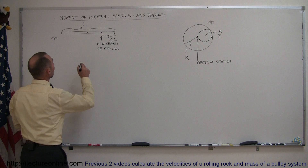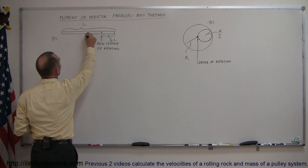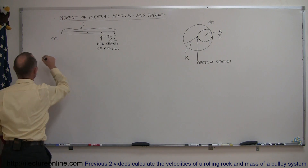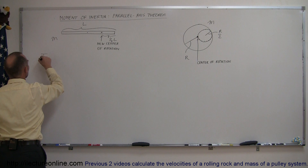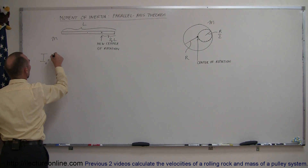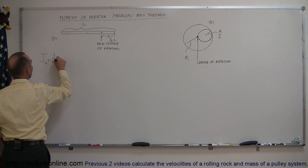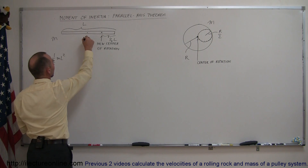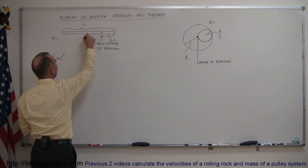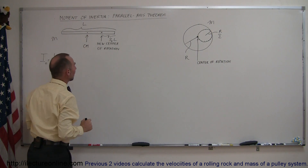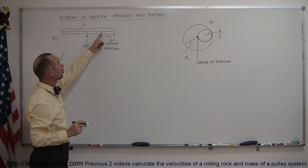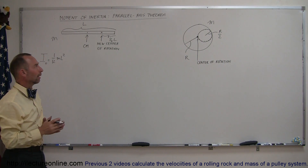For example, here we have a bar that was originally rotated about its center, rotating like that, and of course I initial would be equal to 1/12 mL squared. That would be the moment of inertia of a bar rotating about its center of mass. But then if we move the point of rotation over here, how do you figure that out?